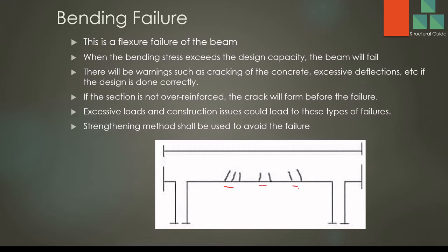Concrete fails at a strain of about 0.0035, while steel yields at a strain of 0.002. So steel yields before the concrete fails. If you correctly design the beam, when the strain reaches 0.002, the reinforcement starts yielding — that is, elongation of the reinforcement starts. When reinforcement starts to elongate, the concrete strain has not yet reached 0.0035. With that elongation, there may be deflection and cracks will appear on the concrete surface. That's good — that's the kind of warning we expect.